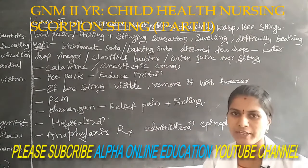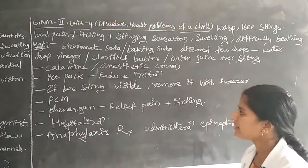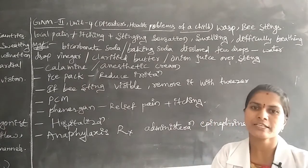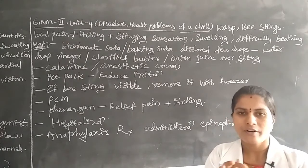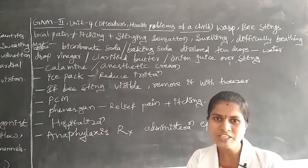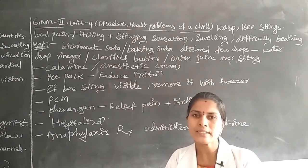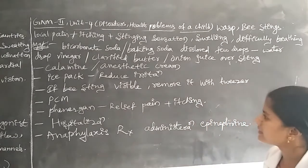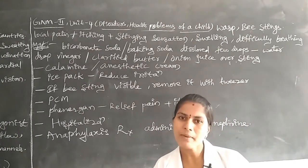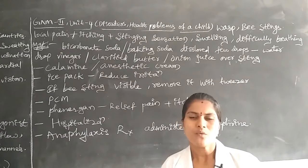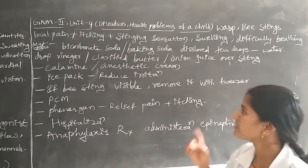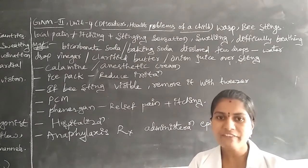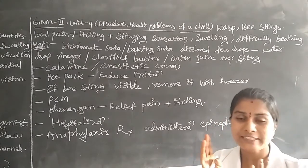If the problem is not cured immediately with the home remedy, we administer an anesthetic lotion or cream, or calamine cream, as a topical application. Whichever part is swollen or has edema formation, that part should be treated with the anesthetic lotion. Next, we apply an ice pack on the affected part to reduce pain, since the child affected by bee or wasp stings will be experiencing pain.